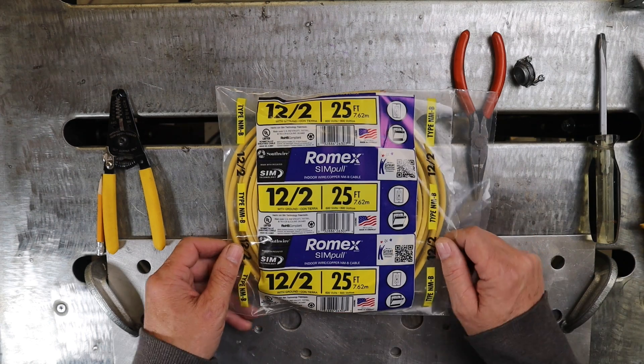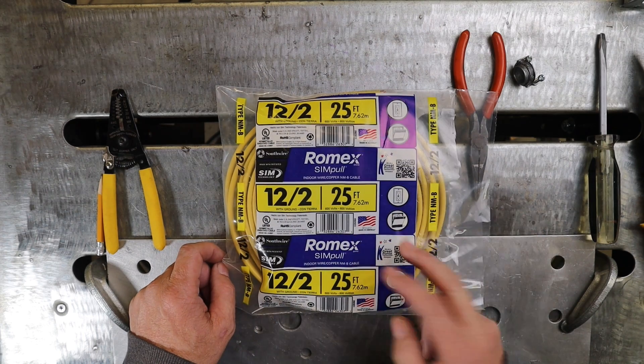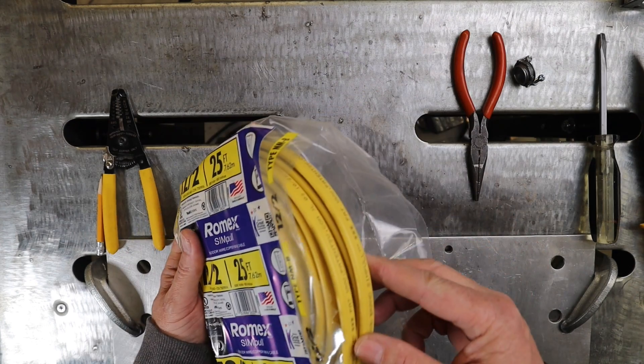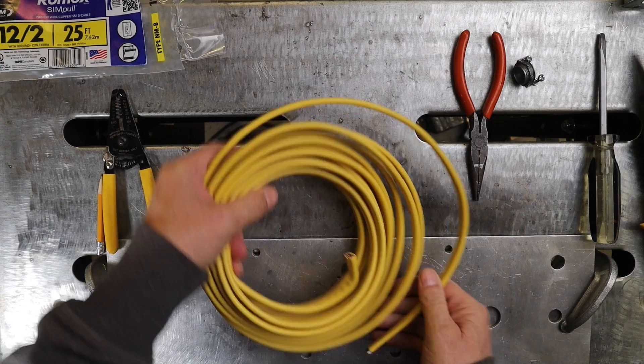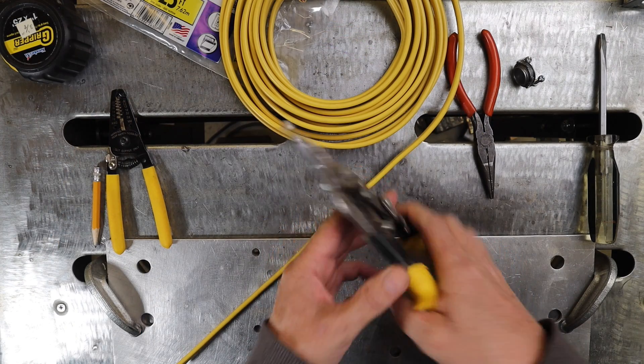This is the wire I've purchased for this project. It's 12-2 with a ground wire. So two conductors and a ground wire and it's 12 gauge. You can tell that by the yellow color. I want to cut two pieces that are about ten inches long and I'm just going to cut them with some tin snips.